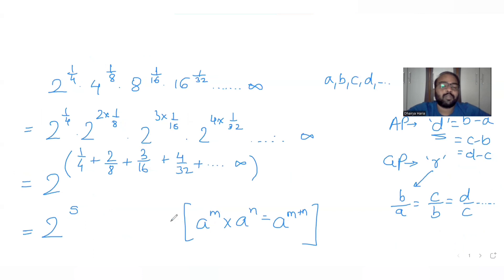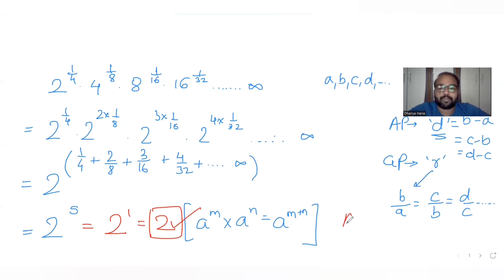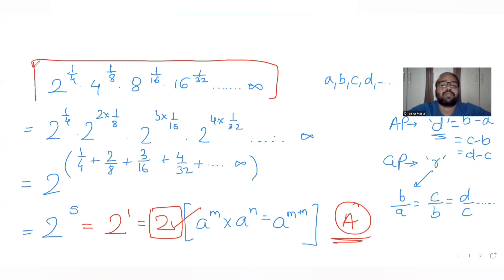Substituting S equals 1 back, the answer to the original question is 2 raised to 1, which equals 2. Looking at the options, the answer that matches is option A. So the correct answer to the question asked is A.